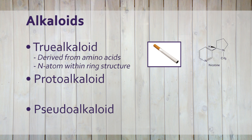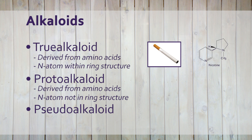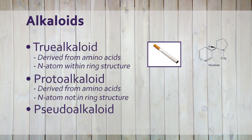Protoalkaloids are also derived from amino acids, but they do not have their nitrogen atom incorporated in their ring structure. Examples are the hallucinogenic mescaline and the stimulant adrenaline.